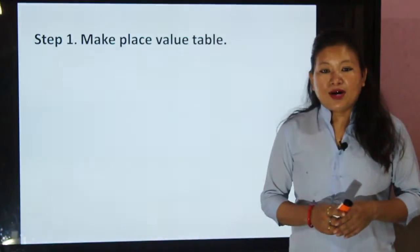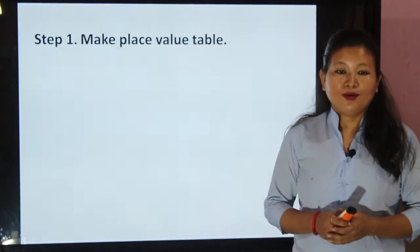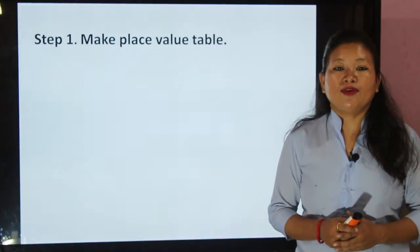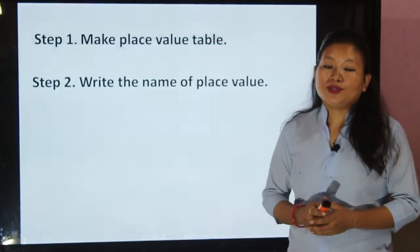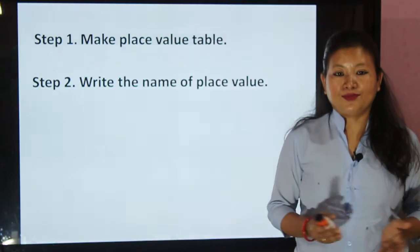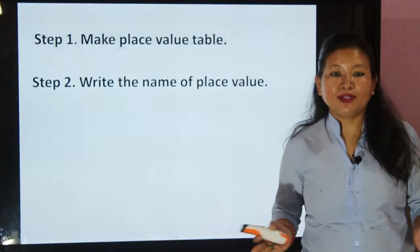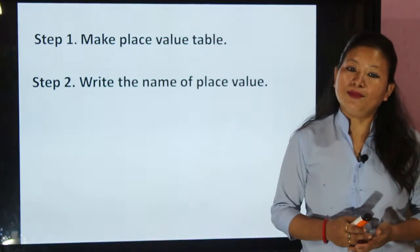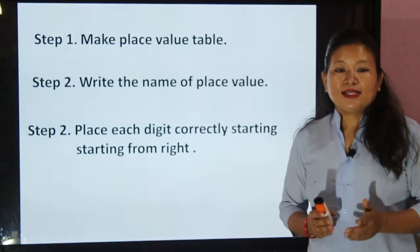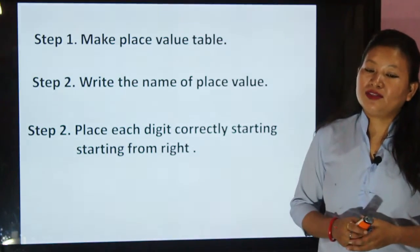In step number one, first of all make a place value table. In step number two, write the name of each place value. In step number three, place each digit correctly, starting from the right.